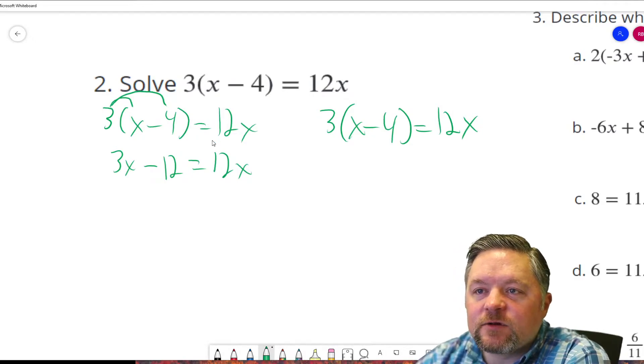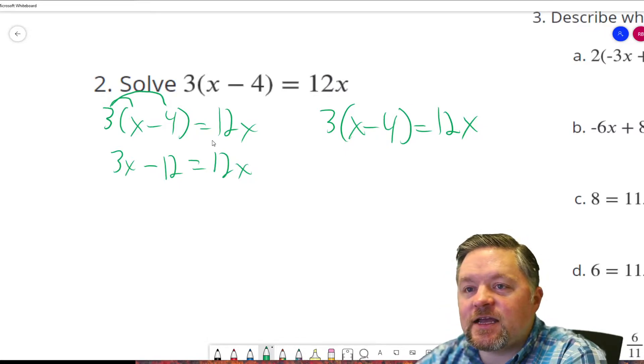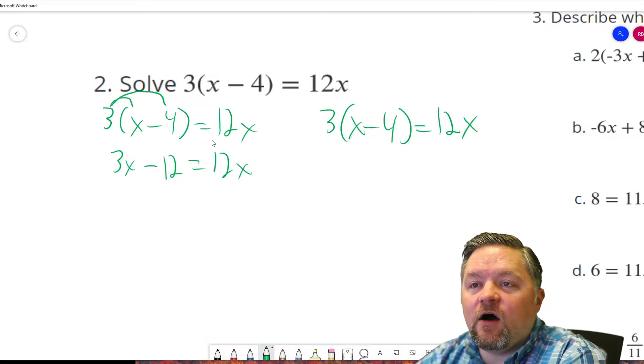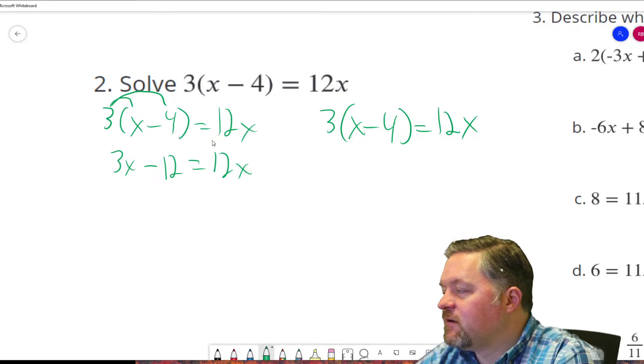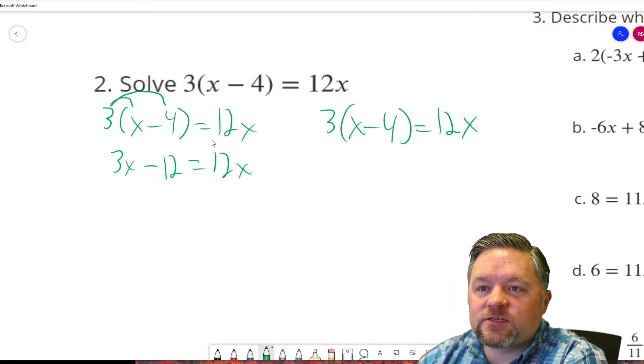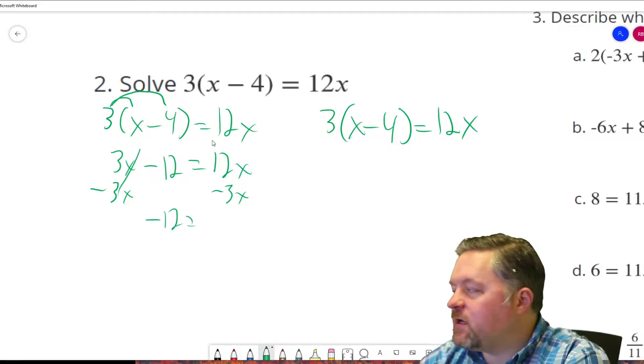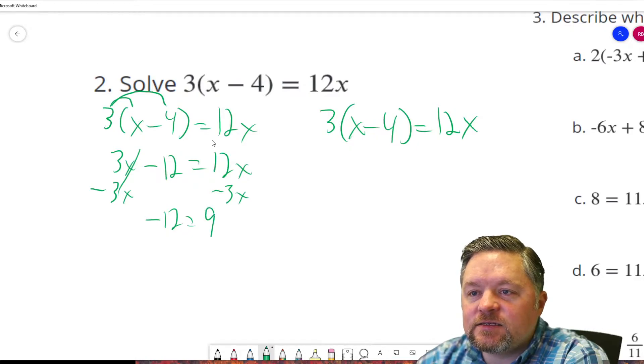We have one side of this equation has x's and numbers. The other side of the equation only has x's. So let's get all the x's onto the side that already only has x's. Which means we have to get rid of this 3x. How do we get rid of 3x? We subtract it. 3x subtract 3x cancels. We're left with negative 12. Equals 12x subtract 3x is 9x.